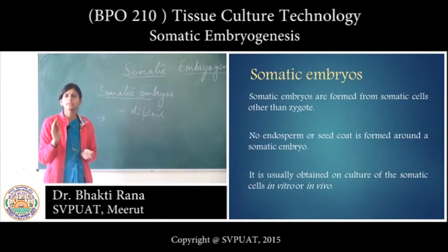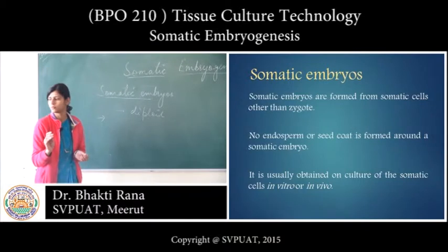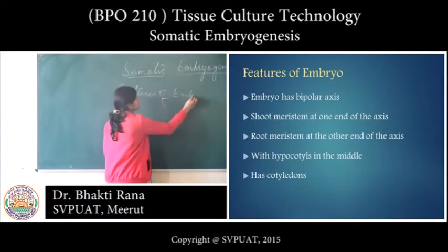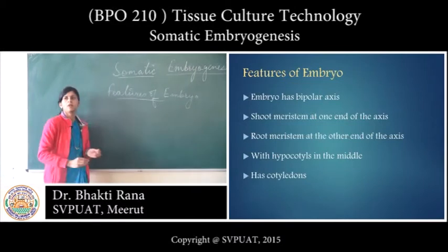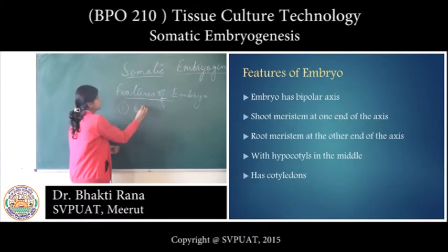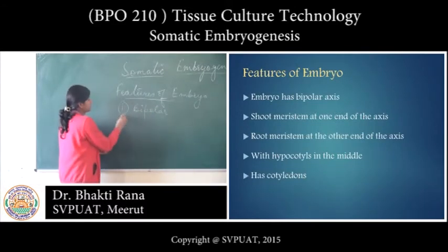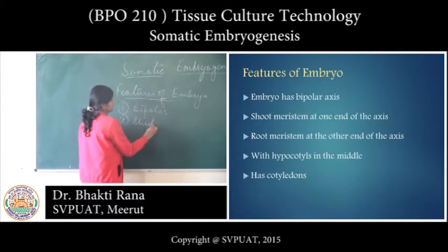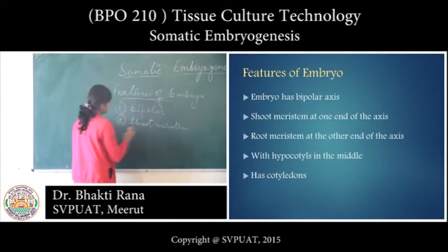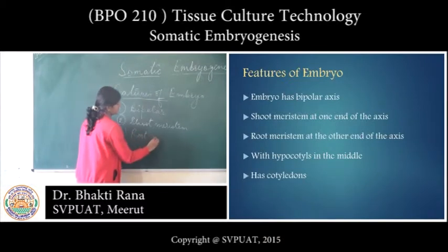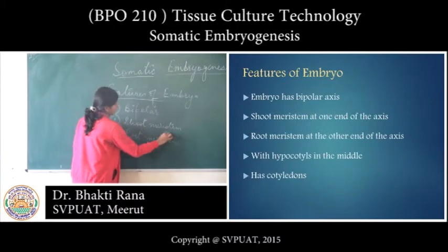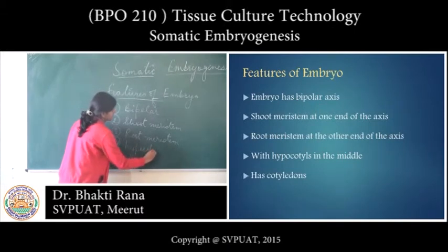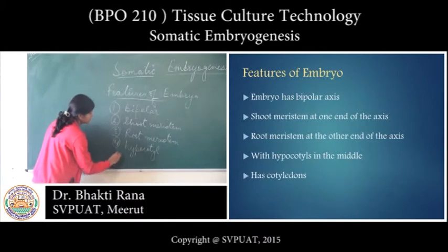In somatic embryos, no cotyledons are formed and there is no seed coat. The features of a somatic embryo are: first, it is bipolar; second, shoot meristem is at one end and root meristem at the other end; third, hypocotyl is formed in between; and fourth, cotyledons are formed.